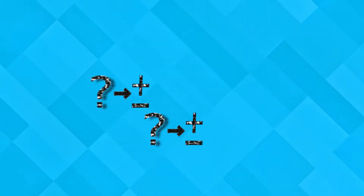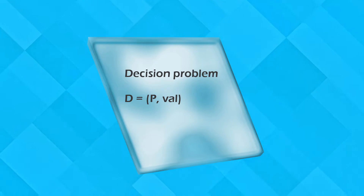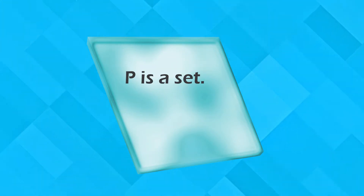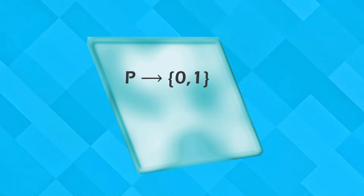I assume that each of two decision problems is trivial. Even in this case, their combination can be NP-complete. A decision problem is the pair P and VAL. P is a set and the elements of P are instances PHI. P is a set of formulae of the first-order language L; VAL is a mapping from P to 1 or 0.